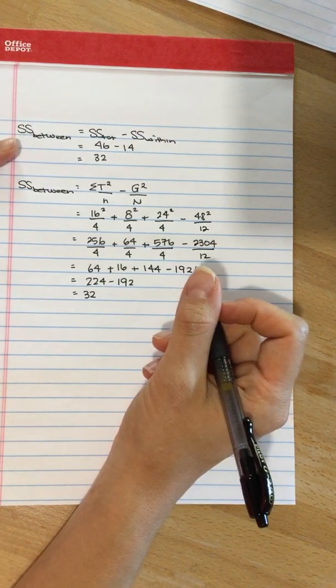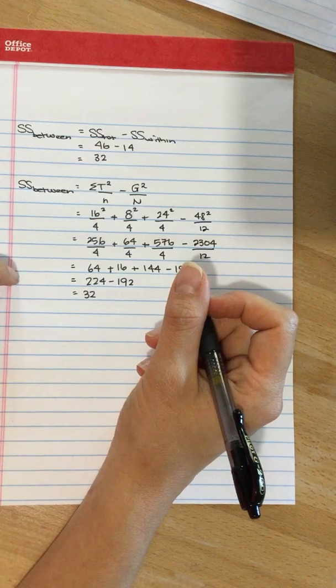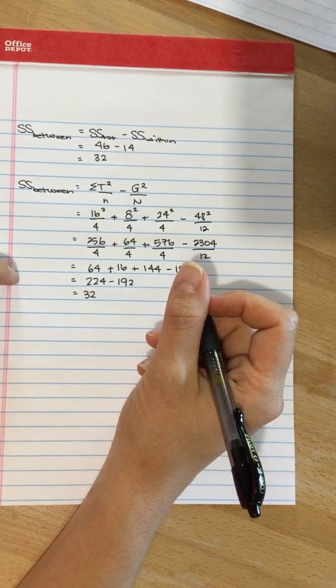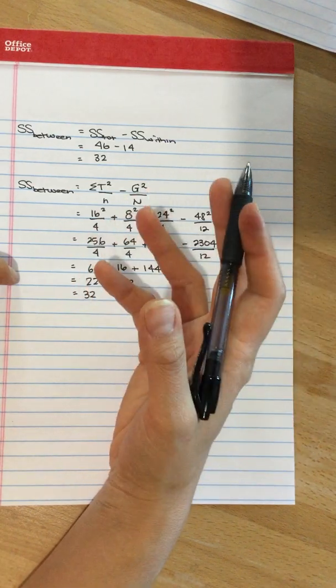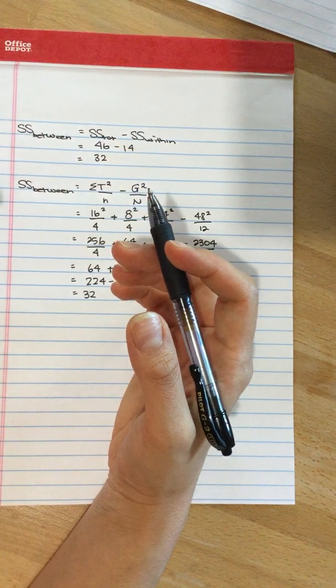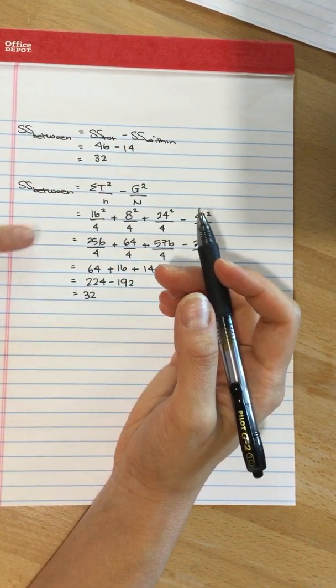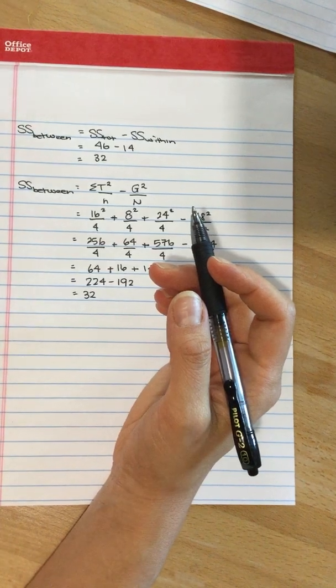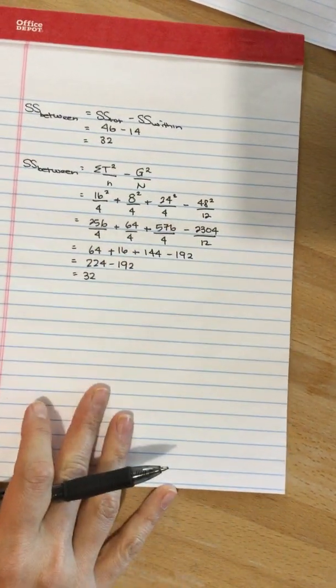The same answer we got up here, the easy way. But sometimes, you need, you don't have the information you need to calculate the sum of squares within. So you can calculate the sum of squares total, but if you don't have sum of squares within, you need to use this formula. And then once you have sum of squares total and sum of squares between, you can calculate sum of squares within. So there are times you're going to have to use this formula.